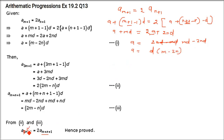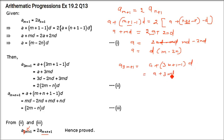Now come to A sub (3m+1). A sub (3m+1) will be a + (3m+1−1)·d, so this will be a + 3md. Now coming to A sub (m+n+1): we substitute a, so we put md minus 2nd plus 3md — replacing a with what we got in the previous step.